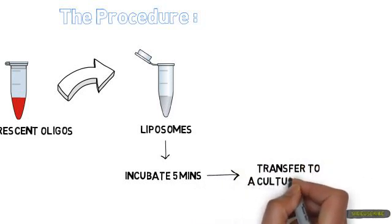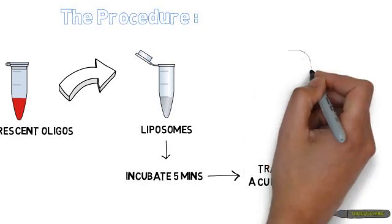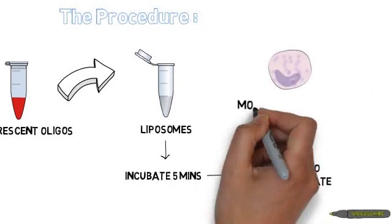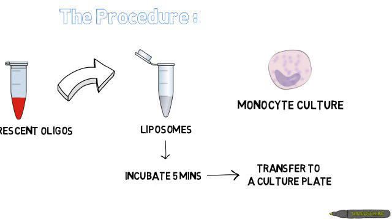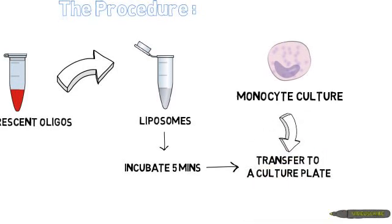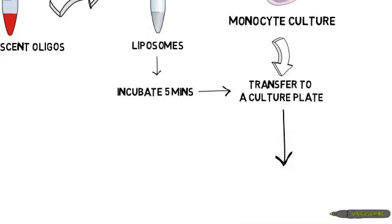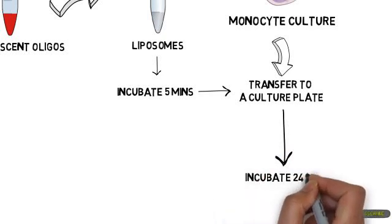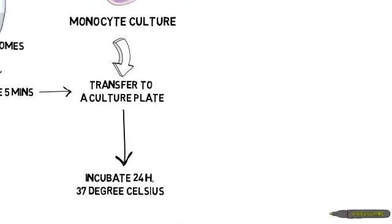Then I will transfer some of this mixture into a culture plate and add the monocyte cells. And then, the plate will be incubated for 24 hours at 27 degrees Celsius.